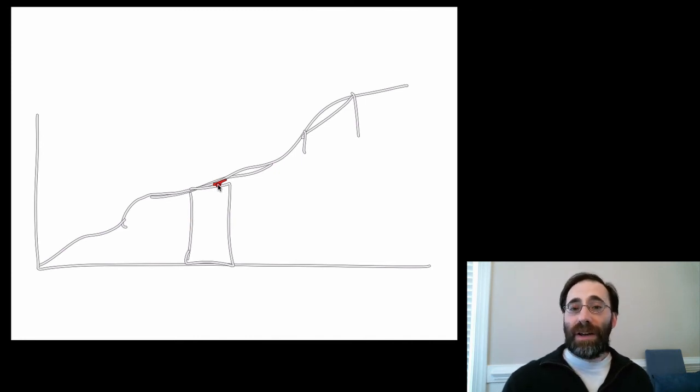We get closer and closer to the true area by squishing these rectangles. So in the limit, as these go to zero, we will end up with an integral.